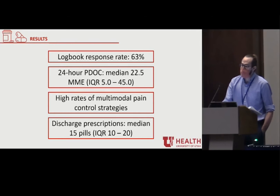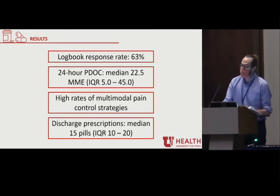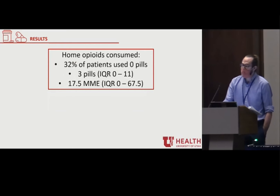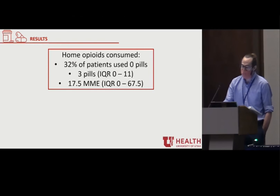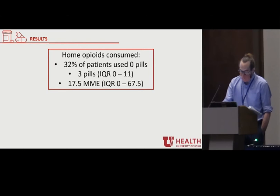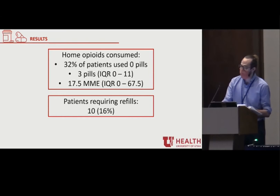Patients who had an open surgical approach and patients with a substance use disorder were prescribed larger prescriptions at discharge. Of those who returned a logbook, nearly a third reported that they didn't use any pills. Even with that, the median pill usage total for all patients was only three, equivalent to 17.5 MME. The only factors associated with increased home usage were gabapentin use and patients who underwent surgery for a diagnosis of cancer. Sixteen percent of patients required opioid refills.